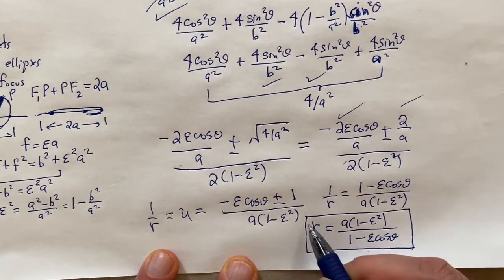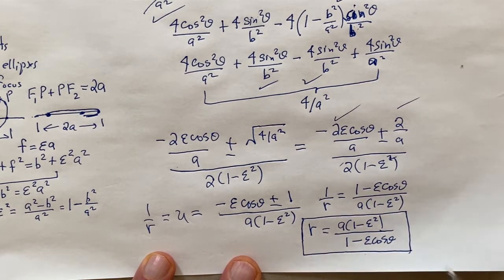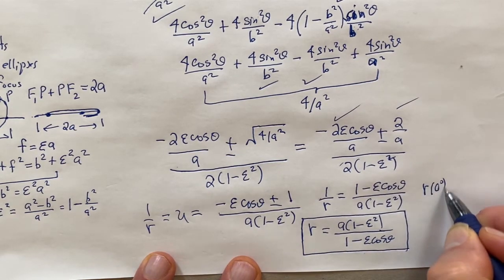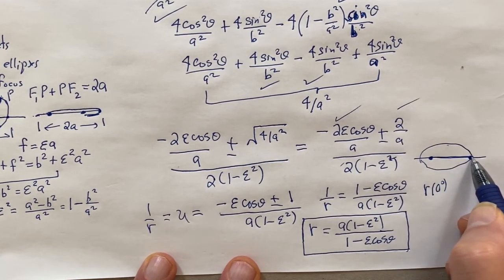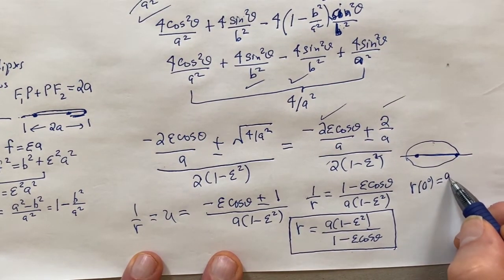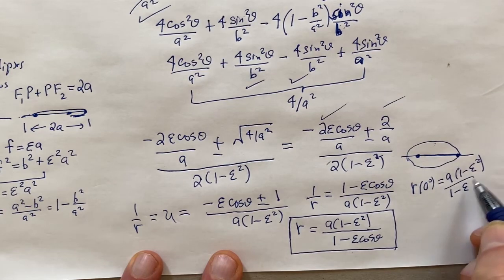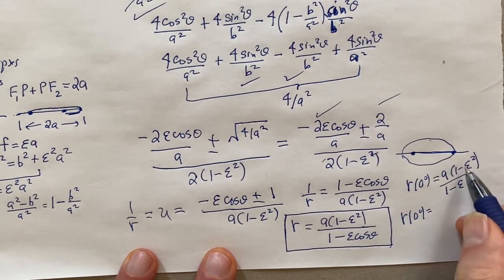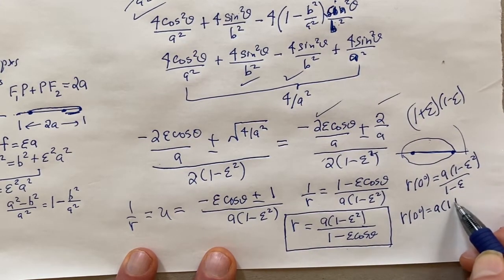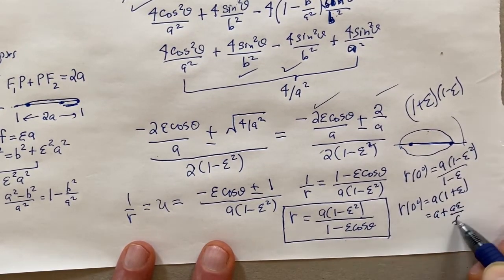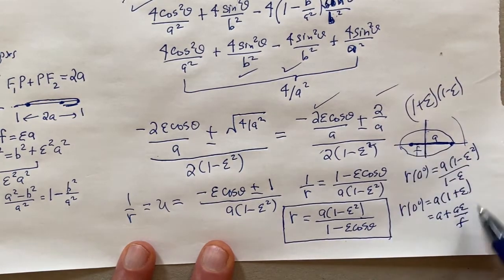This is the final result for the ellipse in polar coordinates, derived in full. Let's check: at θ = 0, cosθ = 1, giving r = a(1−ε²)/(1−ε) = a(1+ε) = a + f, which is the semi-major axis plus the focal length — correct, that's the far end. At θ = 180°, cosθ = −1, giving r = a(1−ε²)/(1+ε) = a(1−ε) = a − f, which is the near end.